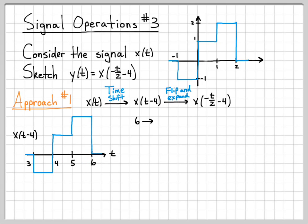I can make a list of how these points map to the time-reversed and expanded axis. I multiply by negative 2. So 6 turns into -12, 5 turns into -10, 4 turns into -8, 3 turns into -6.